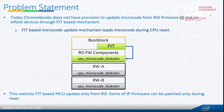Looking at the problem statement: today Chromebooks do not have a provision to update the microcode from the RW region through the FIT-based mechanism. The FIT-based mechanism is a pre-reset thing where the CPU looks up the FIT table, gets the address to the microcode data, and starts loading the microcode update onto the microcode firmware and patches other CPU firmwares as well.